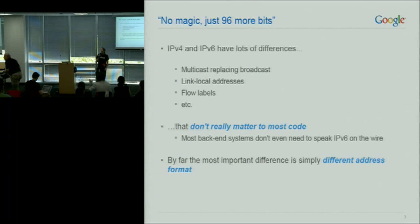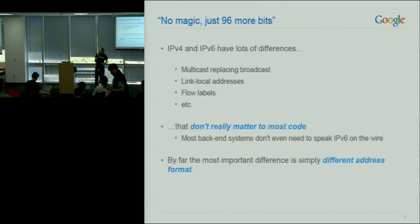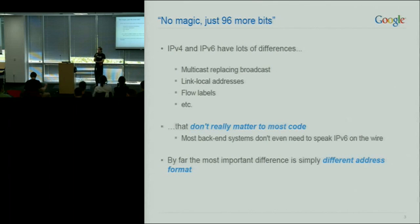IPv4 and IPv6 are really much the same thing. There's the phrase 'no magic, just 96 more bits.' There are minor differences like flow labels — if anyone can tell me what a flow label is good for, please tell me. The single biggest difference, at least when writing server-side code, is that the addresses happen to be larger. If you can fix that, you're 95% of the way there. If you can make your application understand that an address is more than 32 bits, you're good.